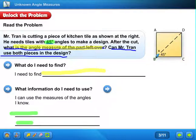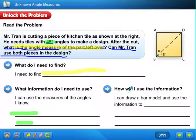CBD is 45 and ABC is 90. How do I use the information? I can draw a bar model and use the information to find the unknown angle measures.